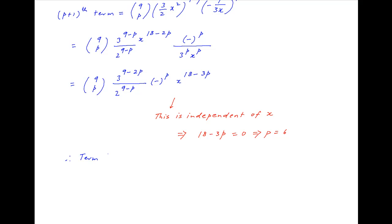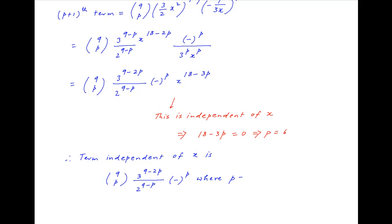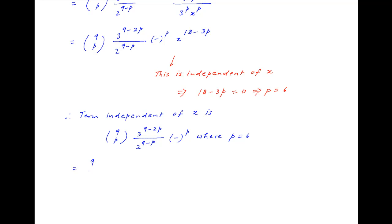Therefore, the term independent of x is equal to 9 choose p times 3 raised to the power (9 − 2p), divided by 2 raised to the power (9 − p), multiplied by (−1) raised to the power p, where p = 6. This gives 9 choose 6 multiplied by 3 raised to the power (−3), divided by 2 cubed, multiplied by (−1) raised to the power 6.